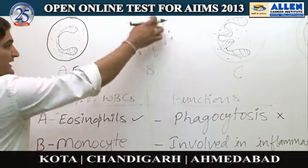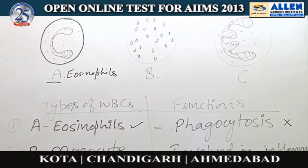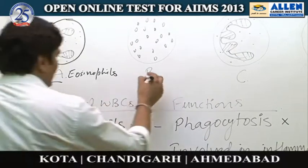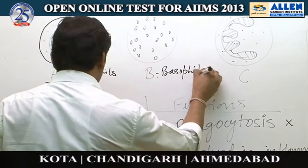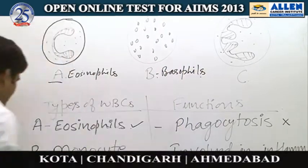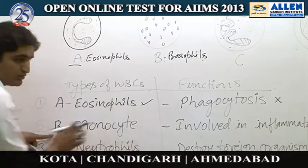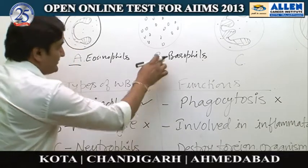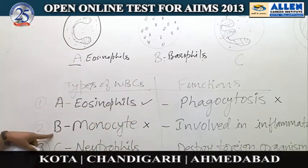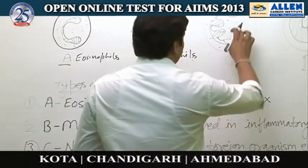The second cell B has many large basophilic granules present in it, so this cell can be identified as basophils. However, in the second option it is written that it is a monocyte — so it is not a monocyte, it is a basophil. Therefore this cell is not correctly identified.